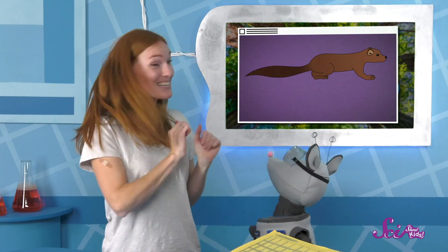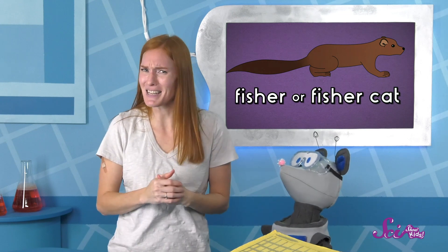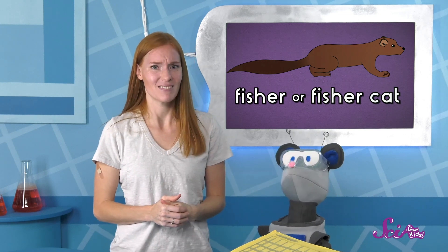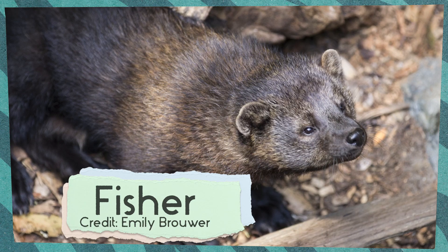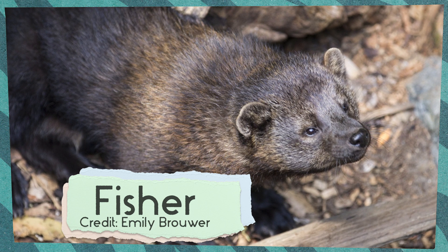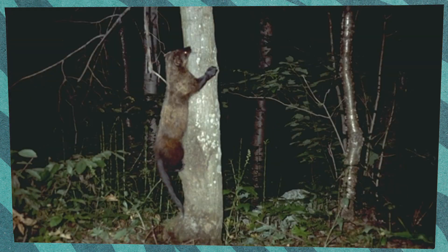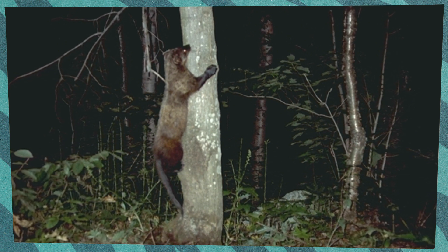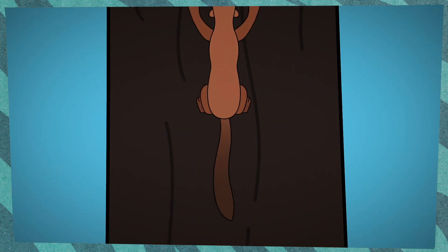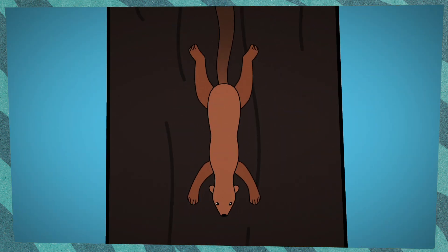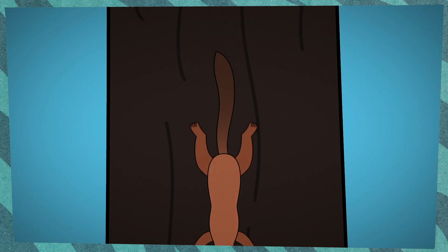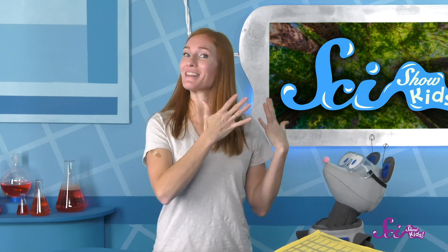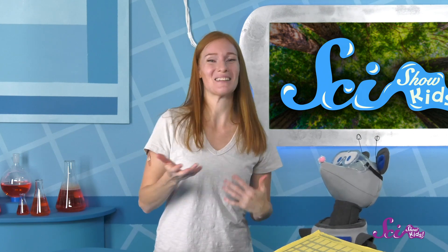This animal is called a fisher, or sometimes a fisher cat. That's kind of a funny name because it doesn't eat fish, and it's not a cat. Fishers are actually a kind of weasel, and they're super good at hiding in thick leaves and branches. They're also amazing climbers. A fisher's claws and hairy feet help it keep a good grip on the bark of trees, and their ankles can turn halfway around! This allows them to climb down from trees face first instead of tail first. That lets them hunt animals that live up in the tree, like squirrels, and on the ground, like porcupines.